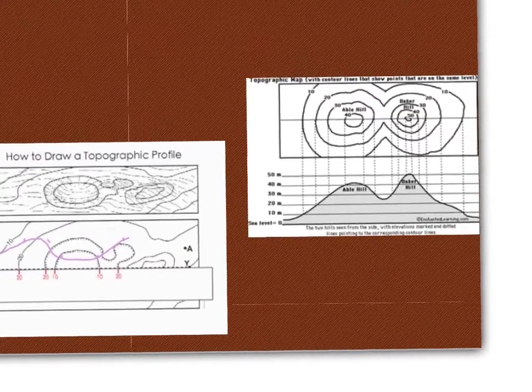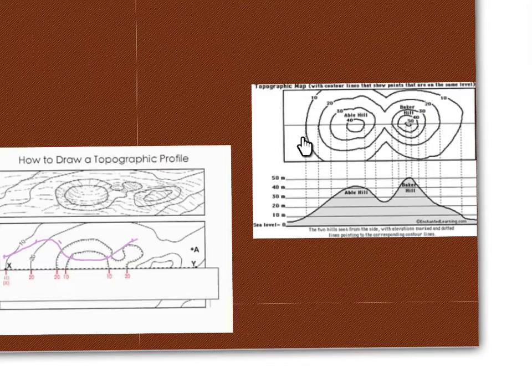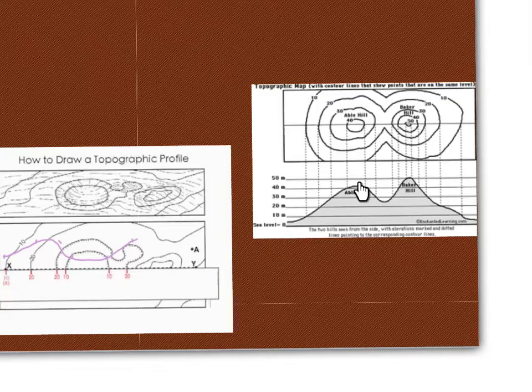Just another way to show you the topo profile. Again, over here, same thing. Every time your line comes in contact with the contour line, you make a point on your graph below, and notice you have two peaks or hills right there.